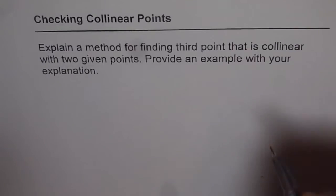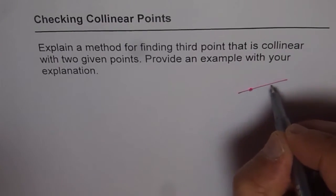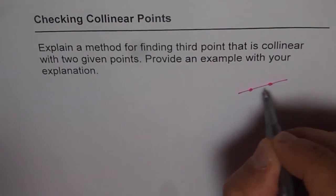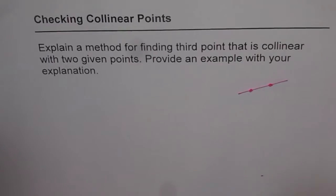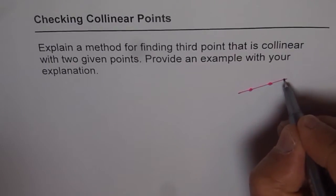So let's see it graphically. Let's say we have two points on a line. Two points will always form a line. Now we want to find a third point which is collinear, which means it lies on the same line. It could be anywhere on this line. This is what we want.